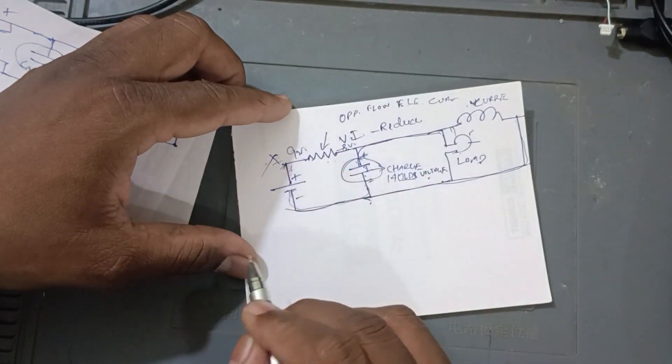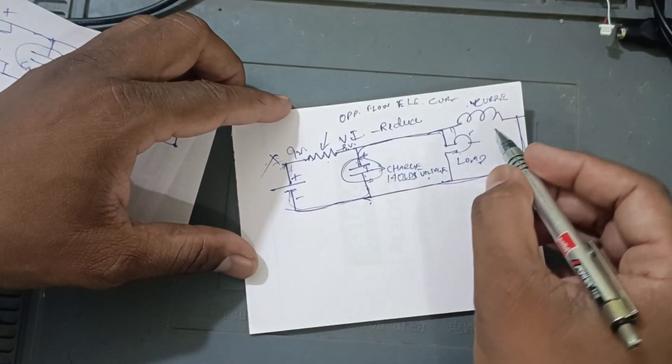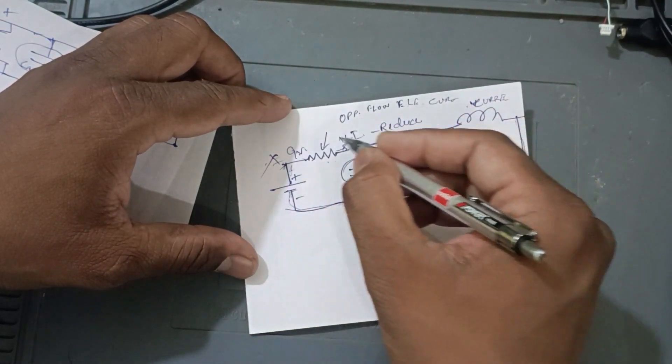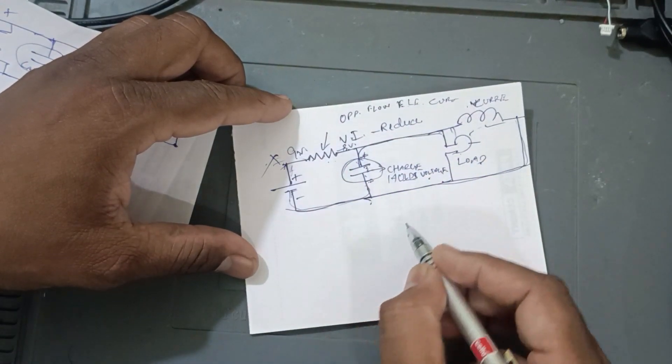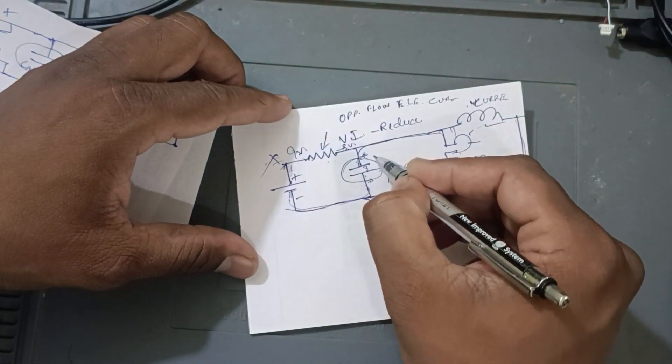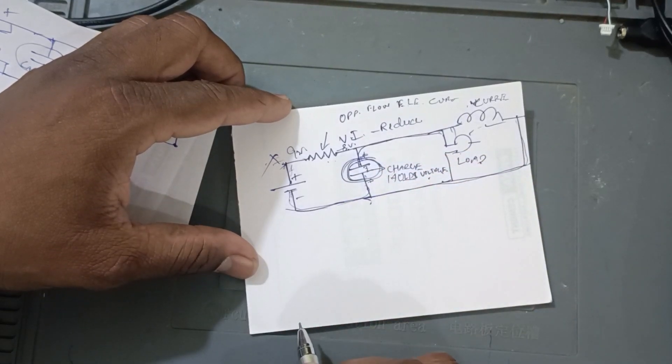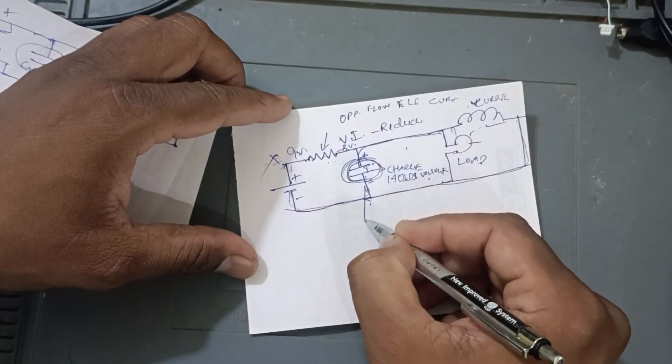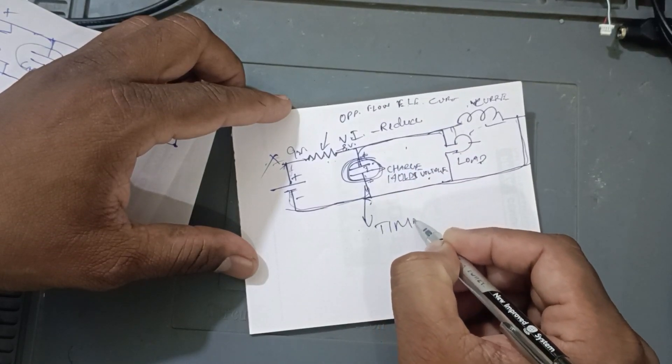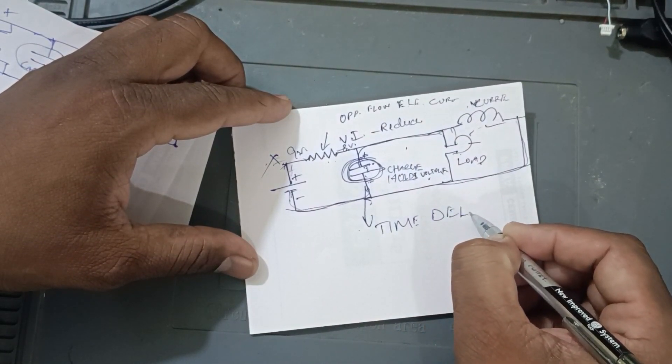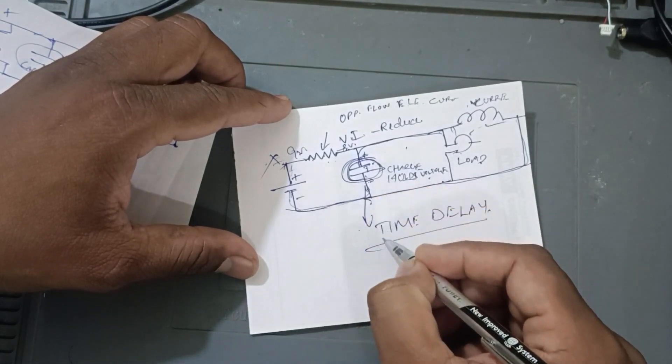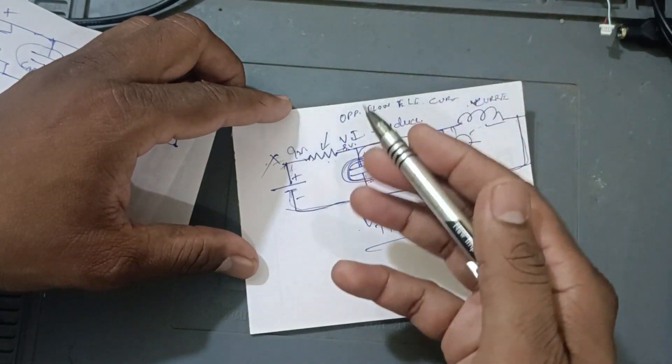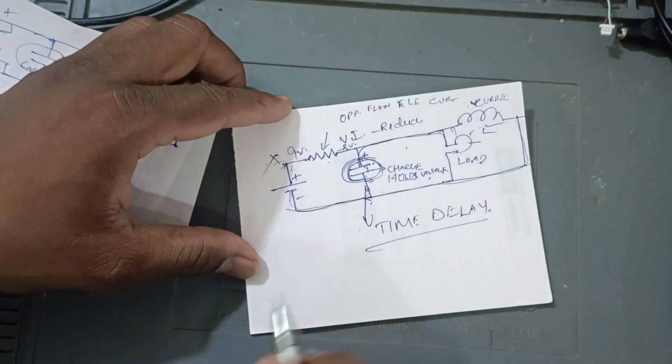In case it cut off, if we won't get the voltage, so here after no current also, here current will be there for some times. That time is will decide this capacitor, the time delay. Time delay, the main reason is time delay. How much voltage it stores, that much of current you will get.